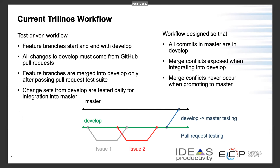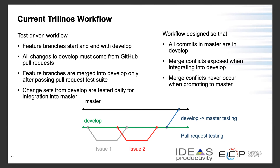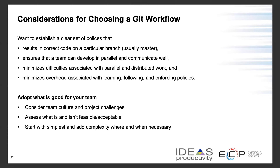Each of these three workflows has its own use case depending on team requirements. The Trilinos workflow is a test-driven workflow used by the Trilinos scientific team. Feature branches start and end with the develop branch. All changes to develop must come from pull requests, which must be tested before merging. Eventually things go from develop to master, so there are no merge conflicts into master.